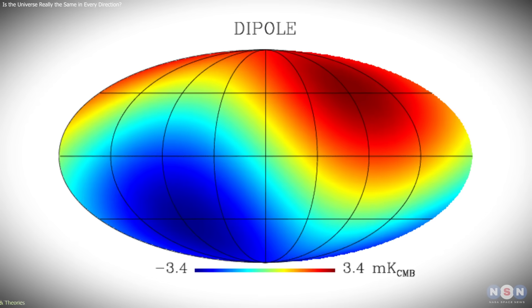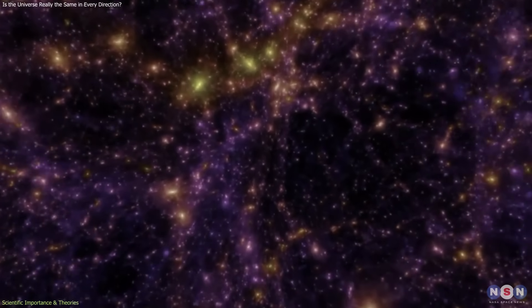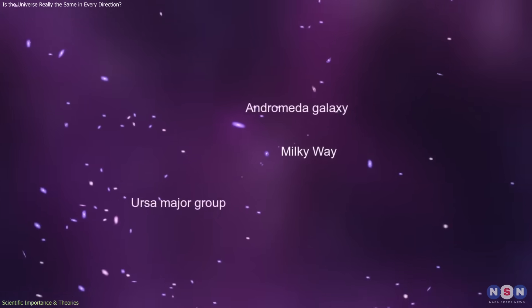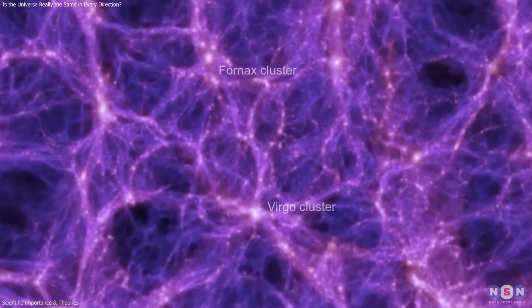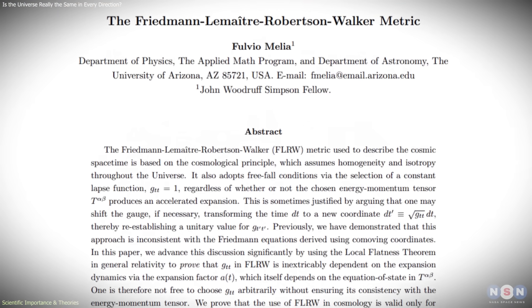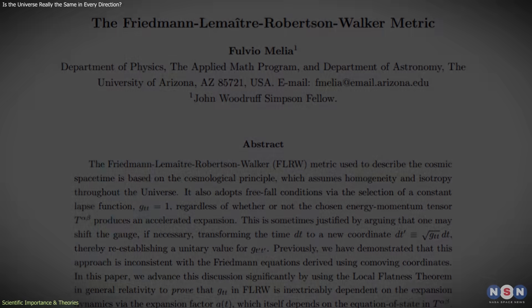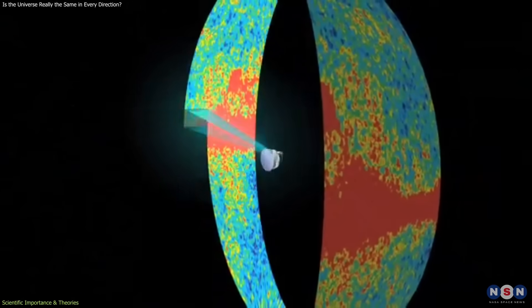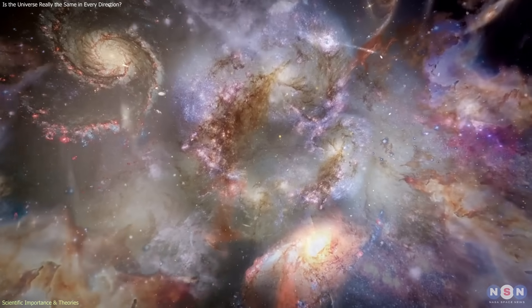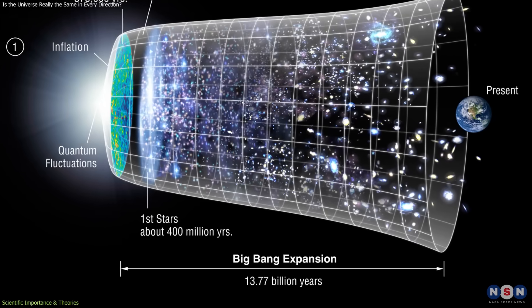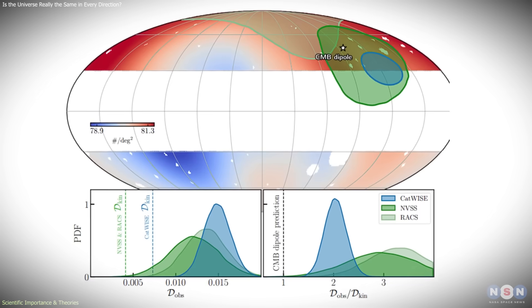The significance of the cosmic dipole anomaly lies in what it challenges at a foundational level. Modern cosmology relies on the assumption that, when averaged over sufficiently large distances, the universe is both homogeneous and isotropic. These assumptions are built into the mathematical description of space-time known as the Friedman-Lemaître-Robertson-Walker framework. This framework underpins the standard Lambda-CDM model and allows cosmologists to link observations of the cosmic microwave background, galaxy clustering, and cosmic expansion into a single, coherent picture. Many key results, including estimates of the universe's age, composition, and expansion history, depend directly on these assumptions.